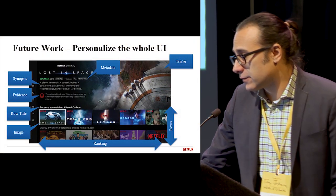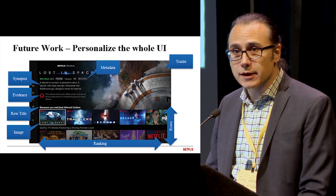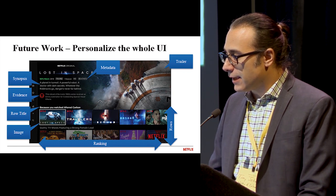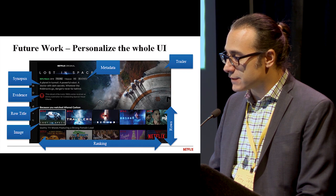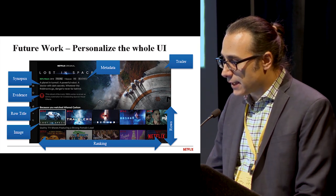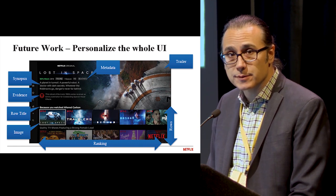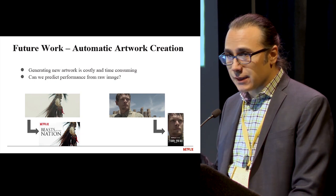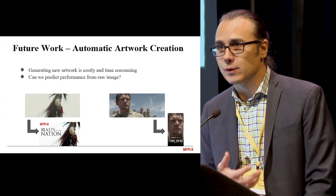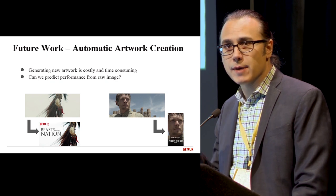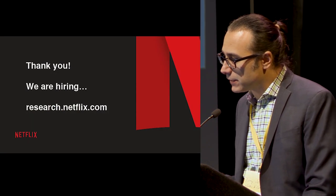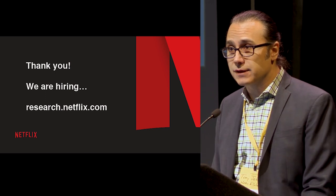What's next? If it works well on images, we should try to change every aspect of the UI and make it all personalized. We're looking at personalizing how we present rows, rankings, the title of the row, the evidence — like whether it won an Emmy — the synopsis (long text or short text), the metadata, and trailer choice. We're also looking at picking artwork automatically rather than having people curate a palette of 20 images per show — scanning the footage to automatically find potential good artwork, then running this personalization engine on top of that. We're hiring — check out research.netflix.com.